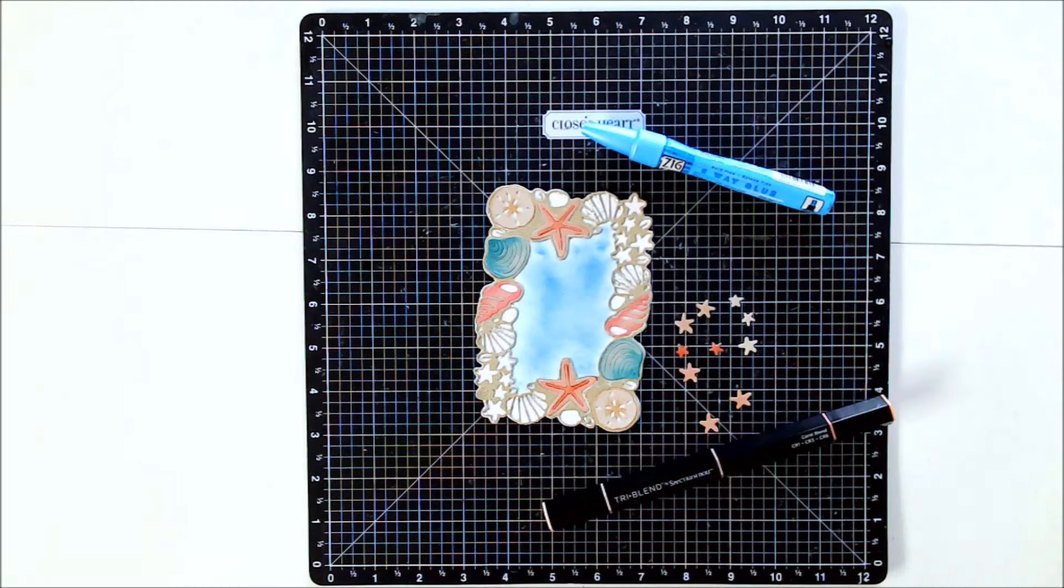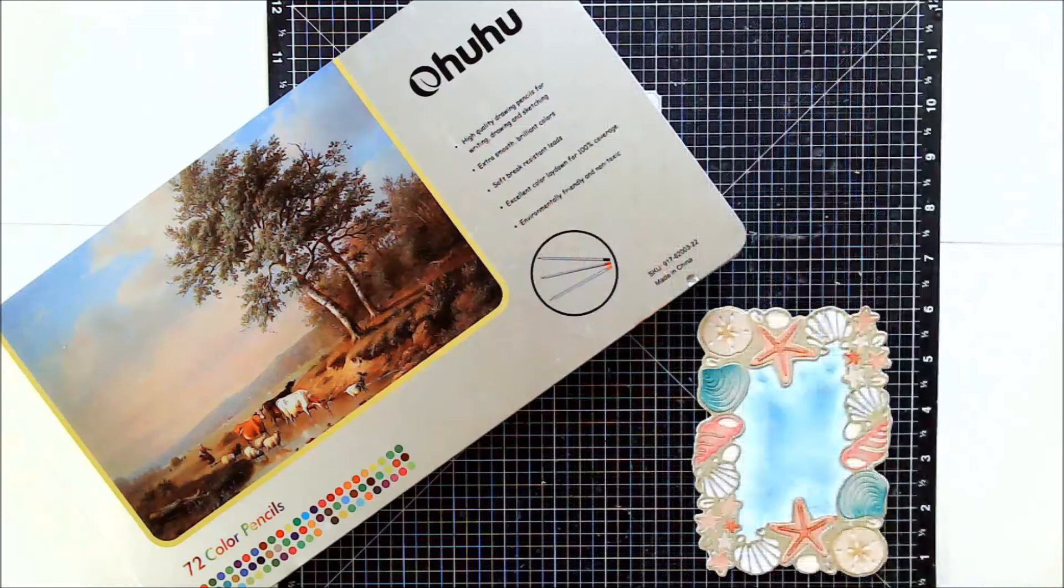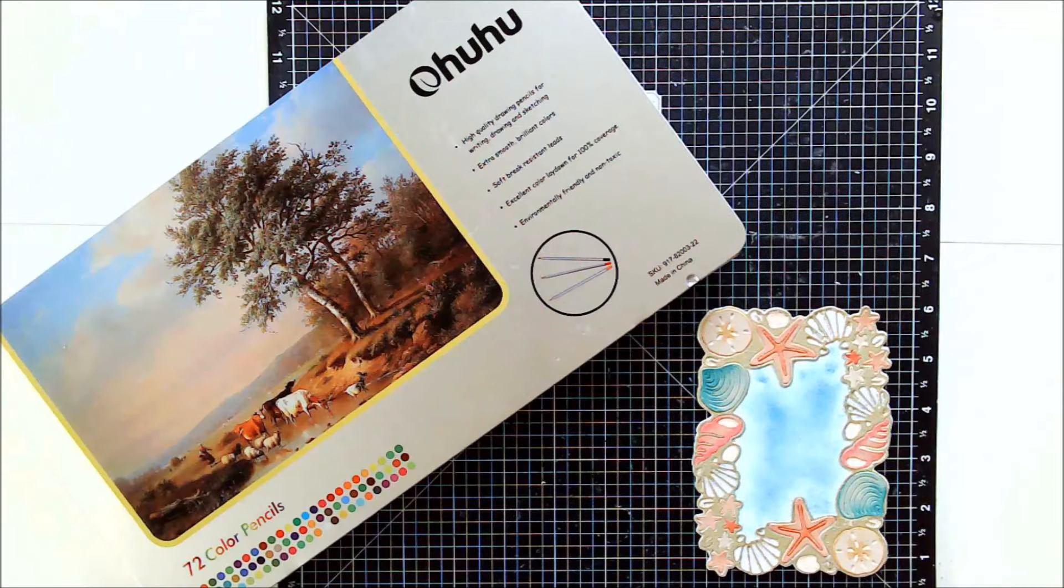And I also ended up coloring some of those tiny starfish before I inlaid those back in. And then I used colored pencils to fill in some of the spaces that I didn't inlay things back into.